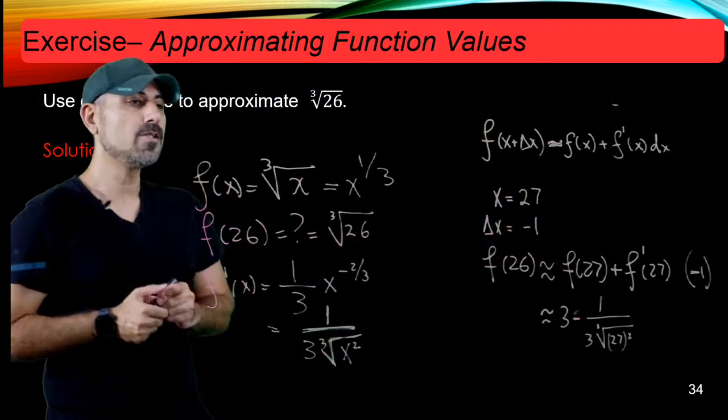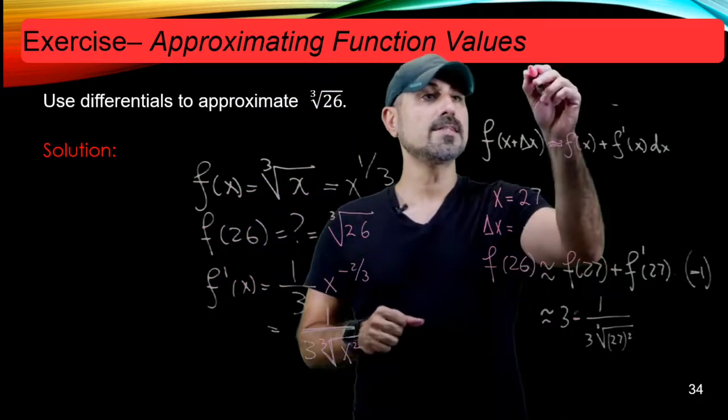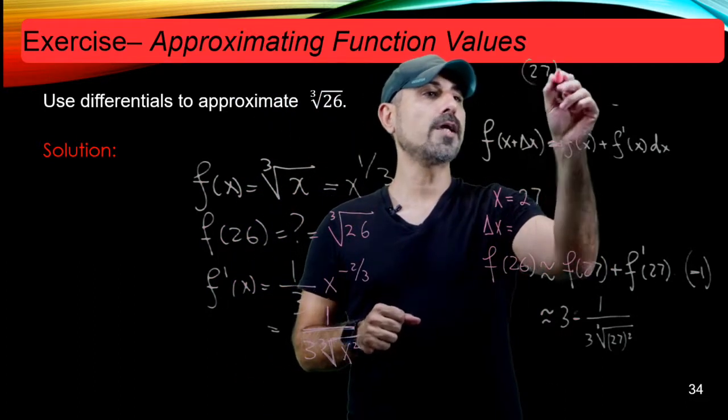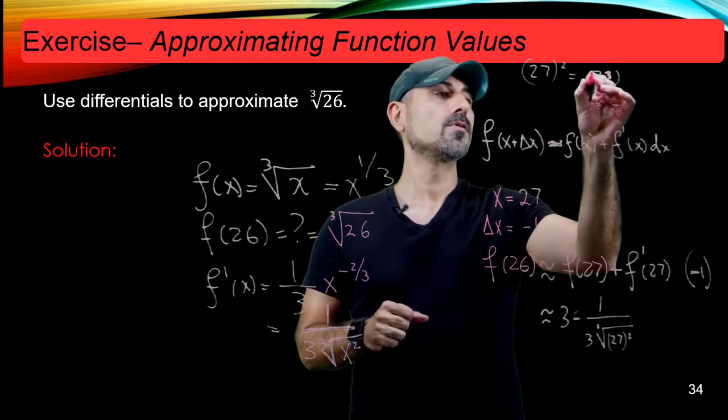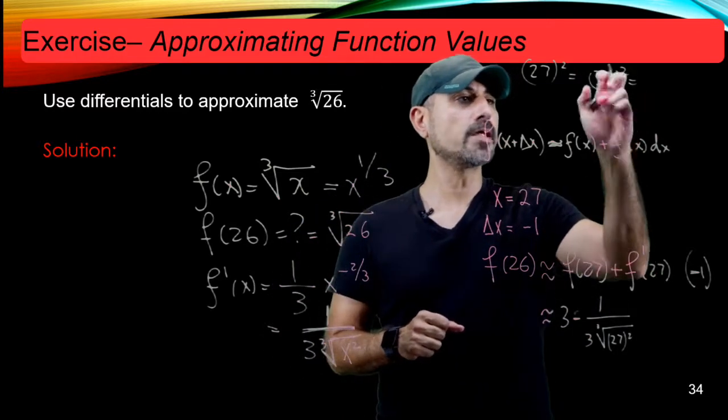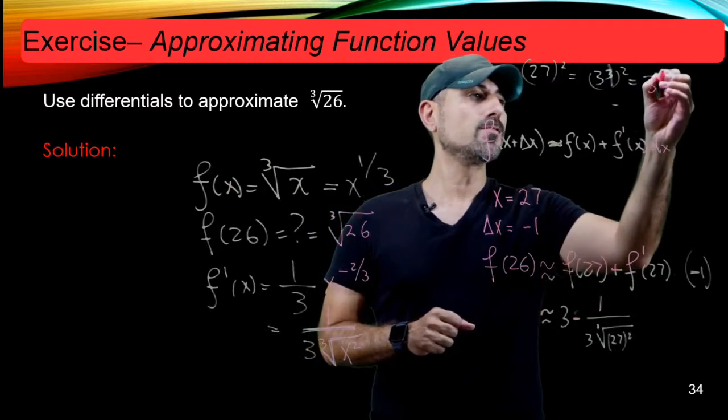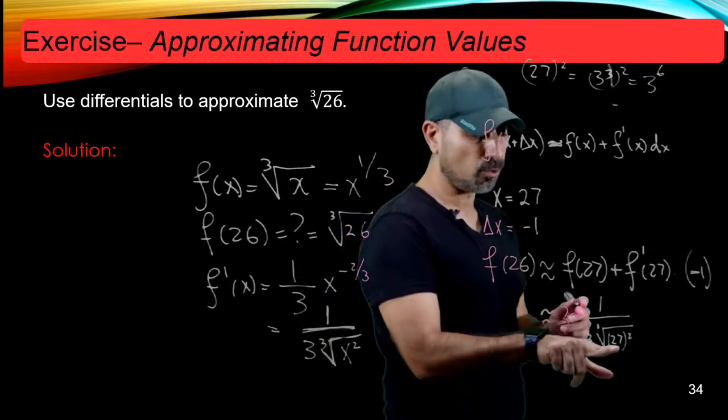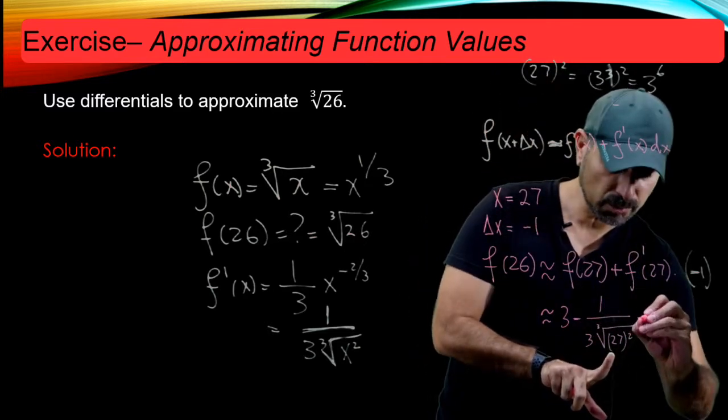Well, as you know, 27 is 3 cubed. So 27 squared is equal to 3 cubed squared, right? 3 cubed squared. That's 3 to the sixth. Therefore, this quantity is going to be 3 to the sixth cubic root. That's 3 squared.